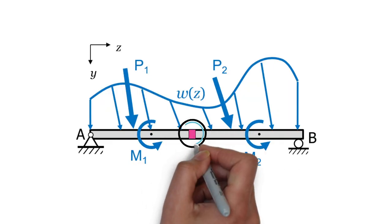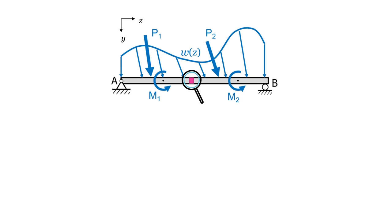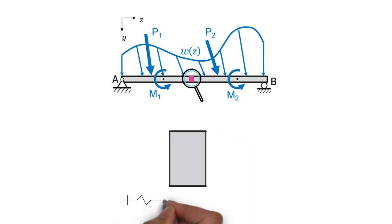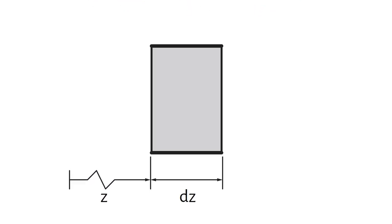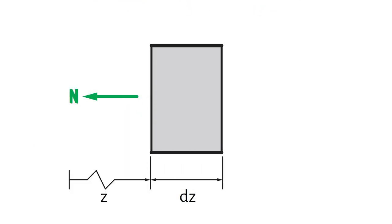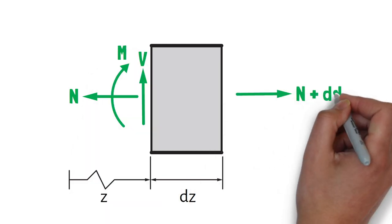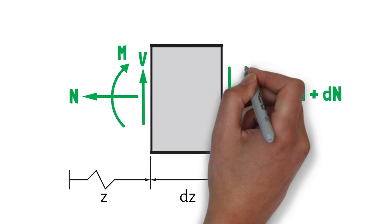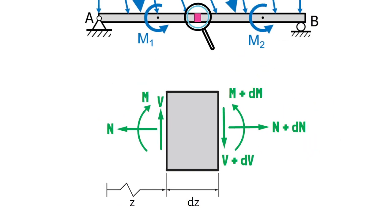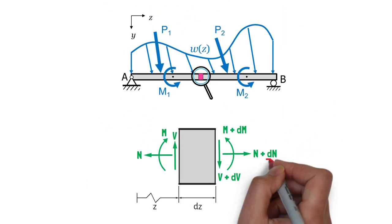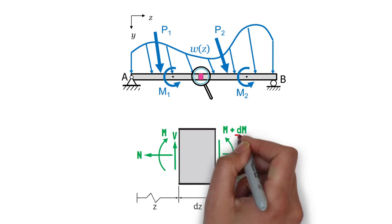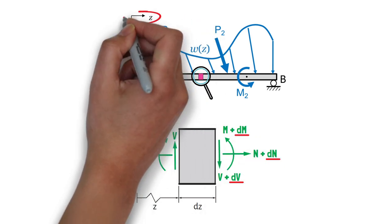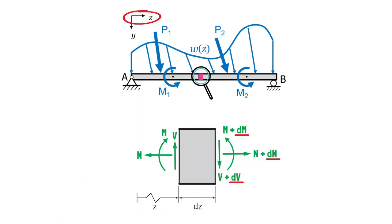What we would like to do is look at a small element of this beam with an infinitesimal width dz, and observe how different loads acting on the element will affect the variation of internal forces across it. We will annotate this on our element by stating that the internal forces change by increments dn, dv, and dm when traveling in the positive z direction.